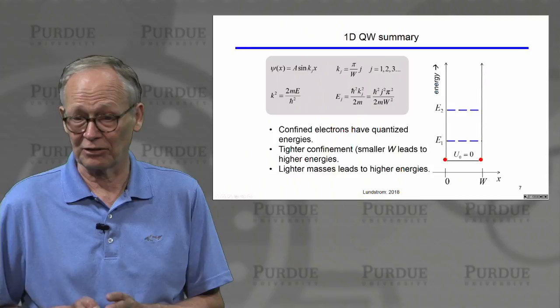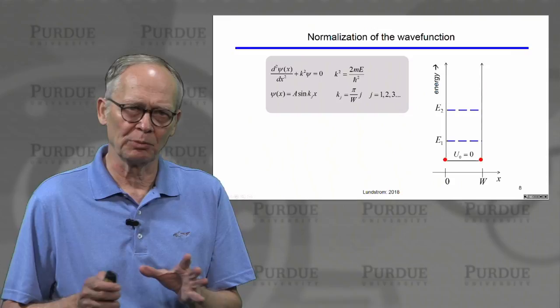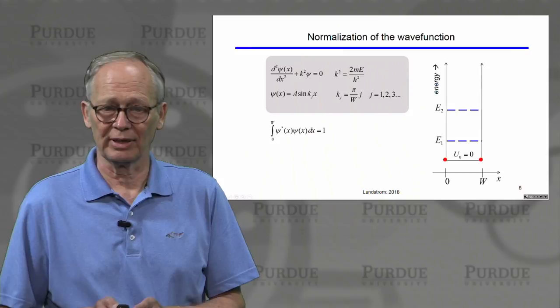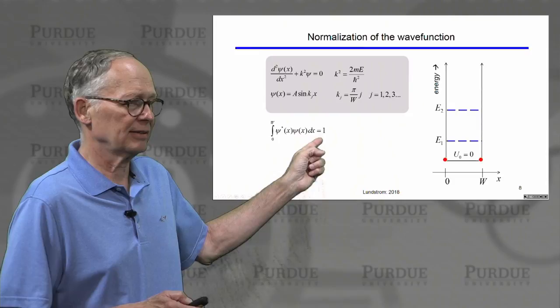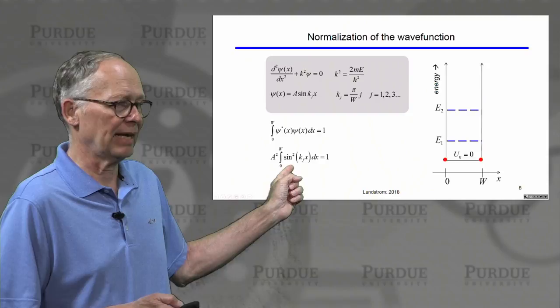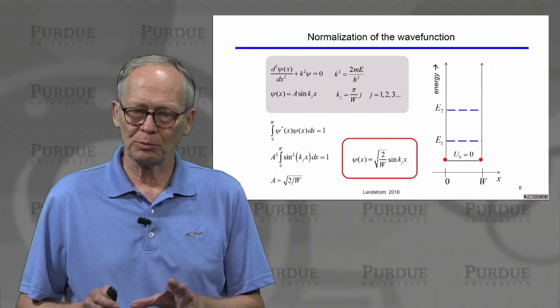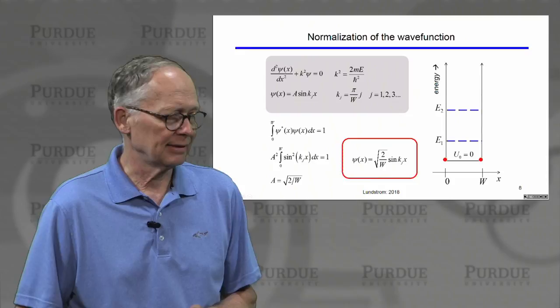When we had traveling waves, we talked about normalizing them so we could describe finding one electron in a certain region. Let's say we have one electron in this quantum well - we would need to normalize this also. We'll take our solutions and integrate psi star psi across the width of the well, giving us a sine function. That integral has to be equal to one, allowing us to determine constant a. The constant a turns out to be the square root of two over W, so our normalized wave function has this form.